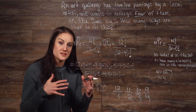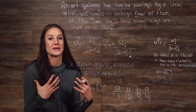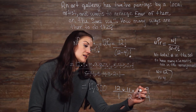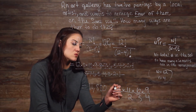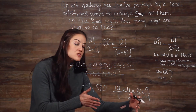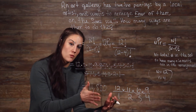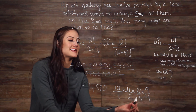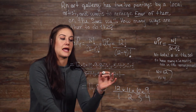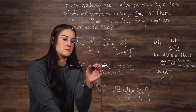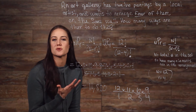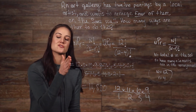So the total permutations — the different ways that we could arrange these four paintings, since we care about the order in which we place them on the wall — is 12 times 11 times 10 times 9. We can see that this is the exact same thing as our permutation formula. Once we cross out 8 through 1 on the top and on the bottom, we're left with 12 times 11 times 10 times 9. My goal in showing you each method is just to help you get down to the foundation of where the permutation formula came from.